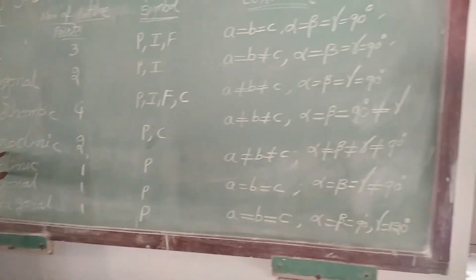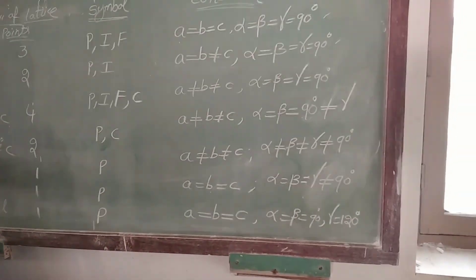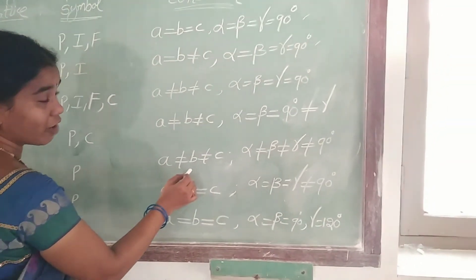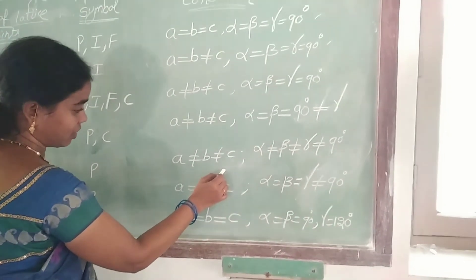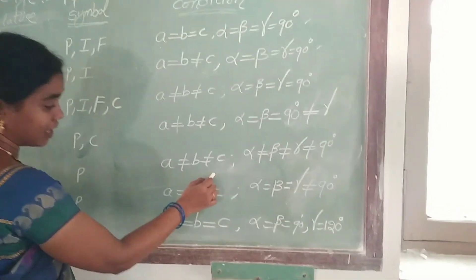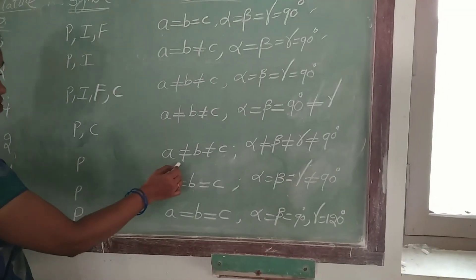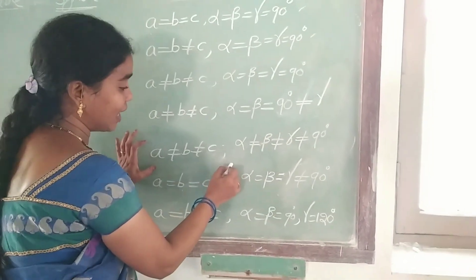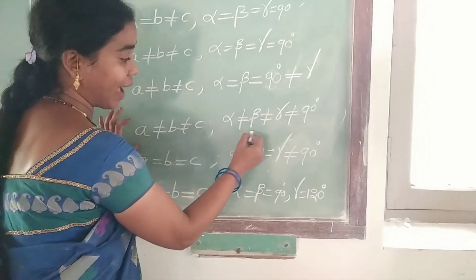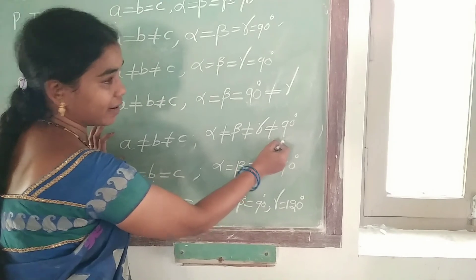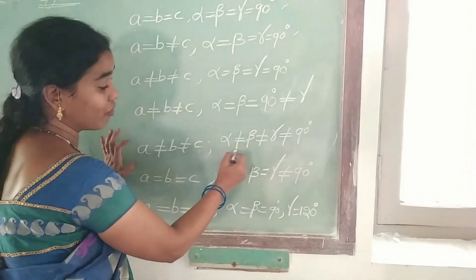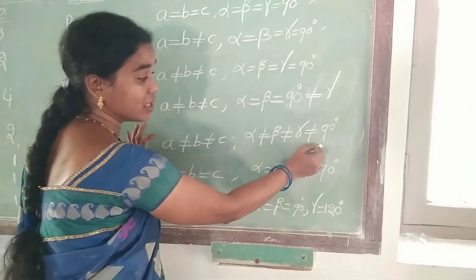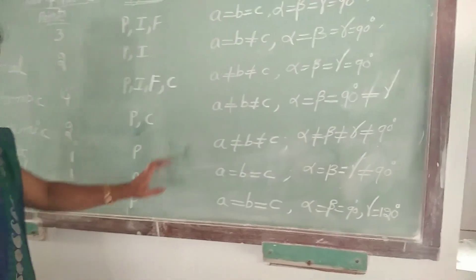Fifth one: triclinic crystal system. The condition is A not equal to B not equal to C — that means all the primitives are not equal — and all the angles are also not equal to 90 degrees. Alpha, beta, gamma are not equal to each other and not equal to 90 degrees.